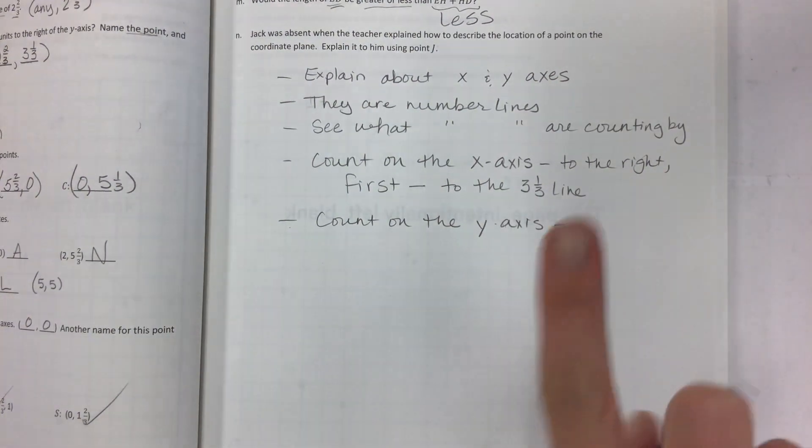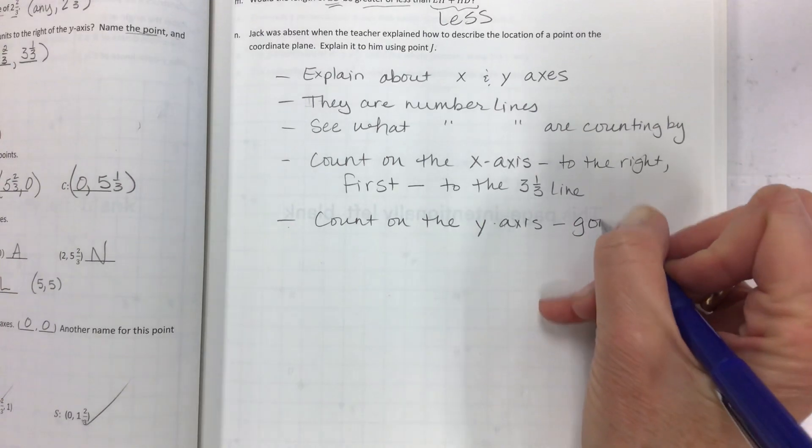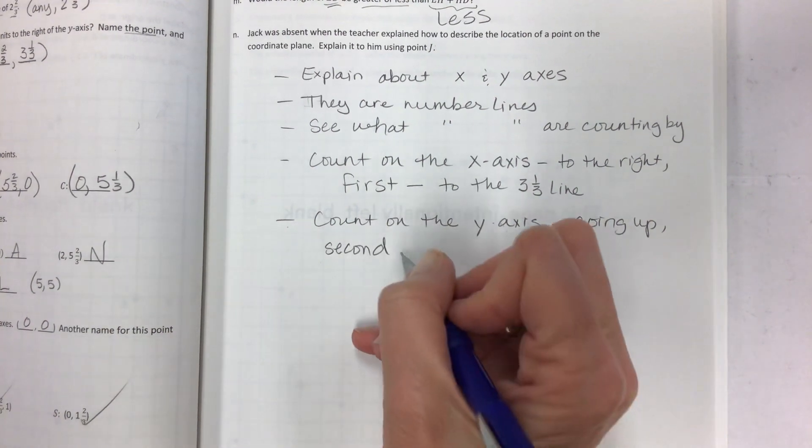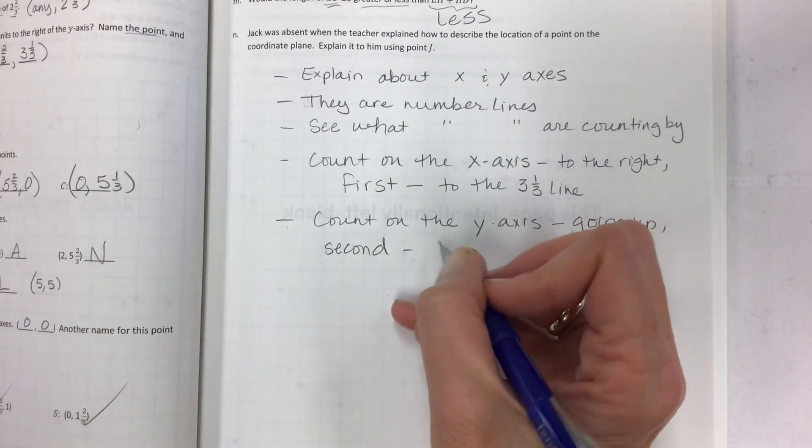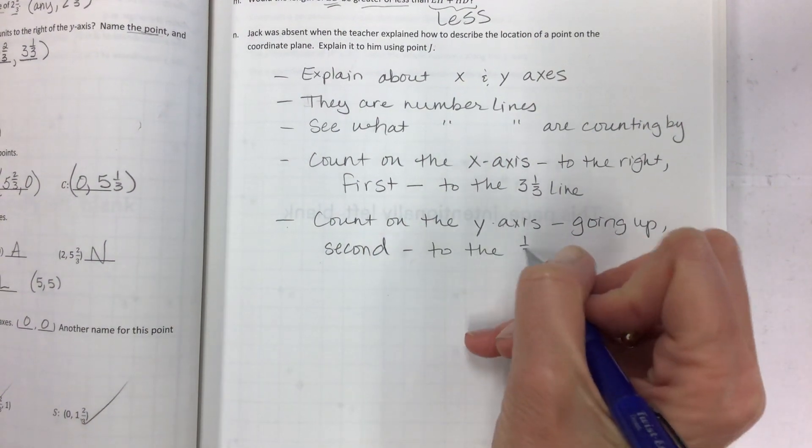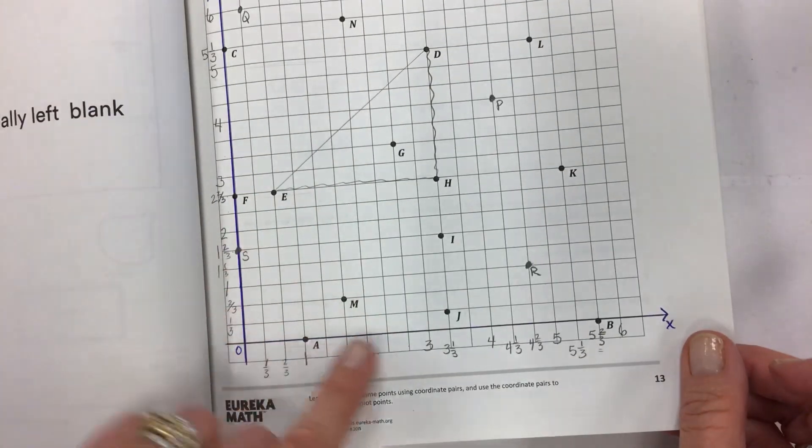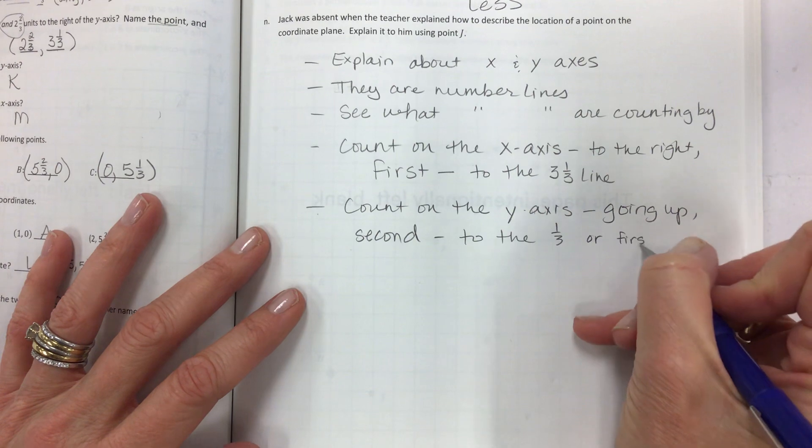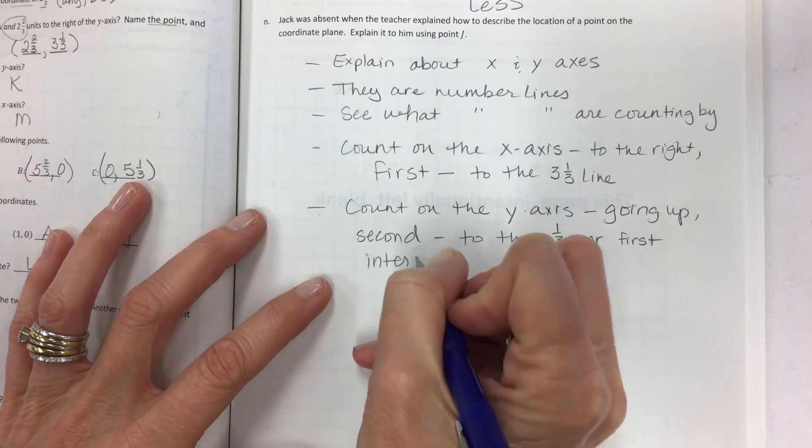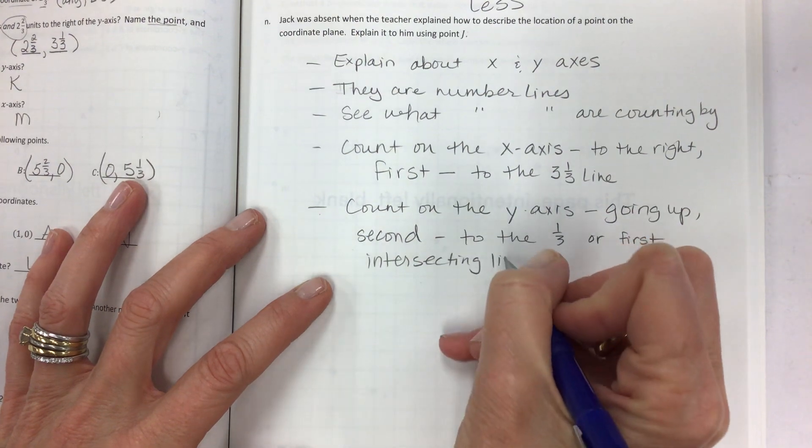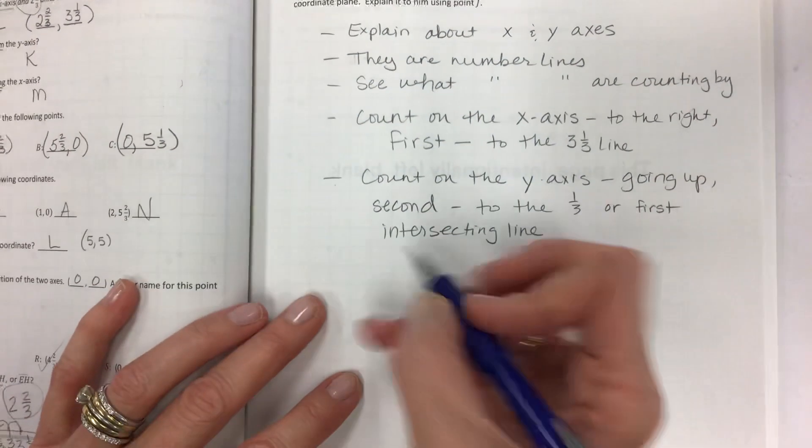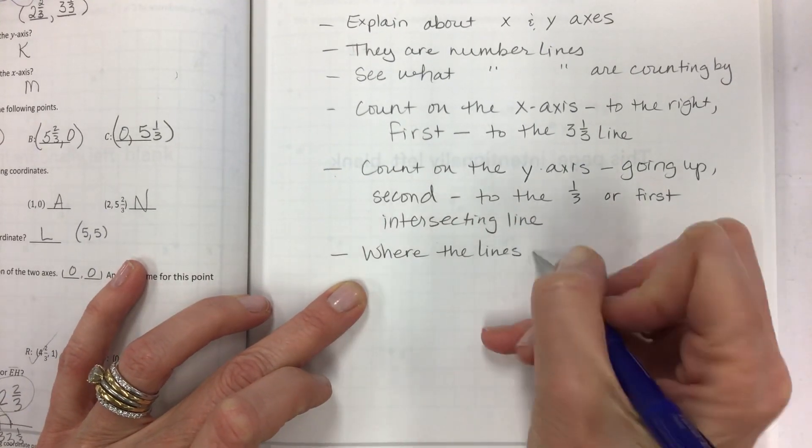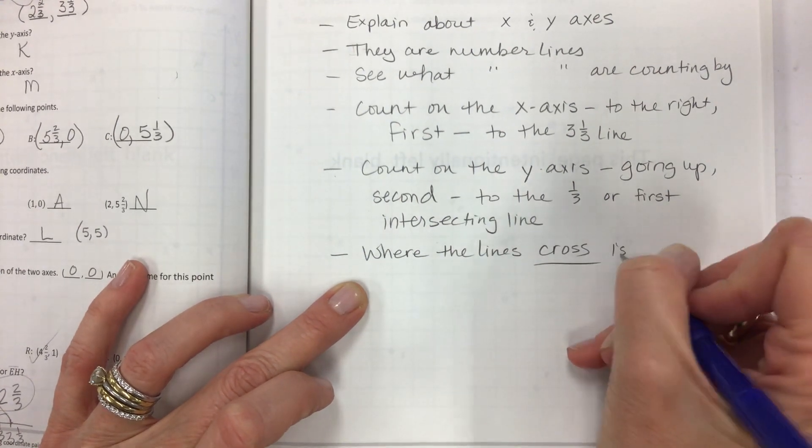Which is going up, second. Do that second. And you're going to the, it's only one-third, it's only on that first line. To the one-third or first intersecting line. So where the lines cross is point J.